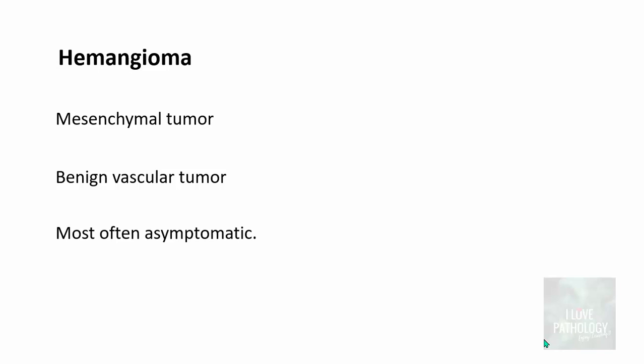Now, what is hemangioma? Hemangioma is a mesenchymal tumor. A tumor can be either an epithelial tumor or a mesenchymal tumor. Hemangioma is a mesenchymal tumor — a benign vascular tumor, a benign tumor of blood vessels. Most often hemangiomas are asymptomatic. As an undergraduate student you need to know two important types: capillary hemangioma and cavernous hemangioma.